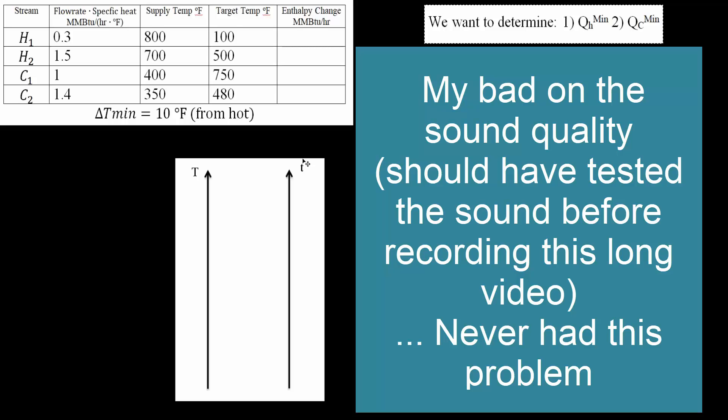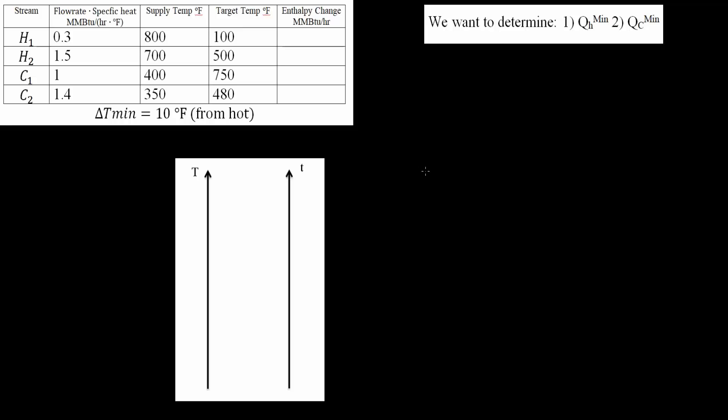In this problem, we want to solve for QHmin and QCmin. We have four streams: H1, H2, C1, and C2, with their respective flow rate and specific heat, their supply temperature, their target temperature, and we can calculate the enthalpy change easily.